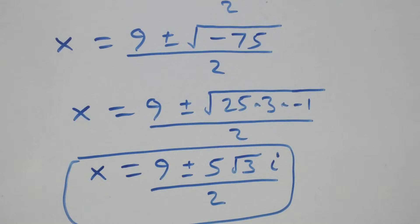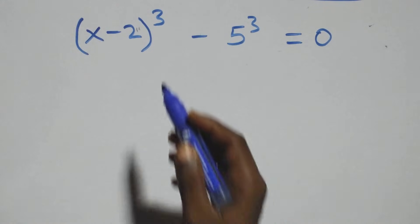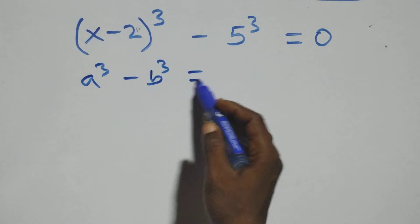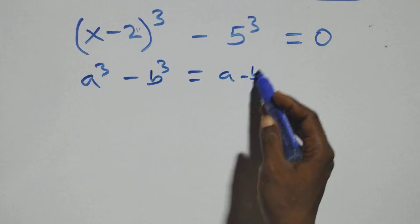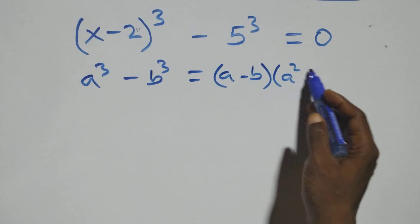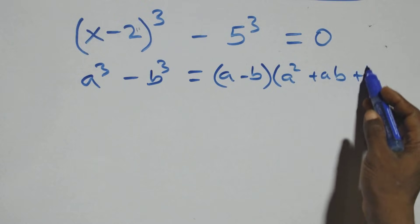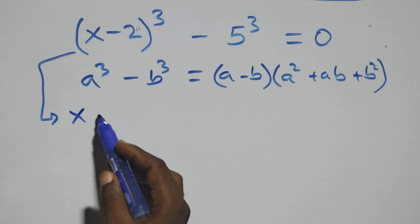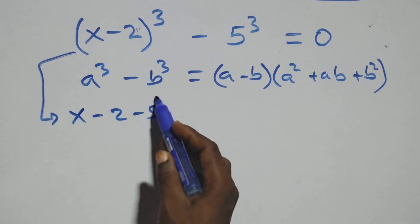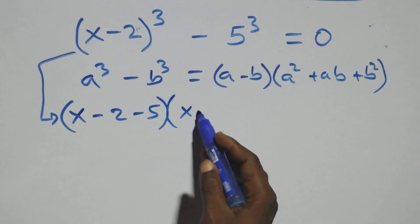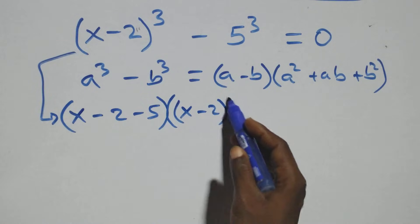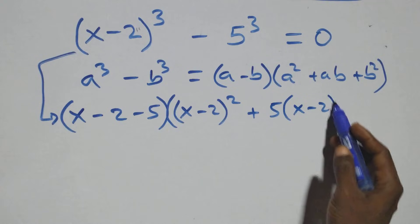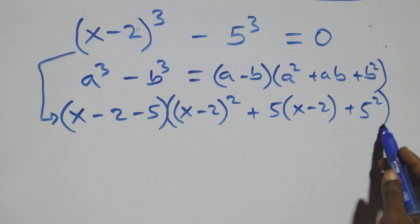For the second case, we apply the difference of cubes identity: a³ minus b³ equals (a-b)(a² plus ab plus b²). With a = (x-2) and b = 5, this gives us (x minus 2 minus 5) times the bracket: (x-2)² plus 5(x-2) plus 5² equals 0.